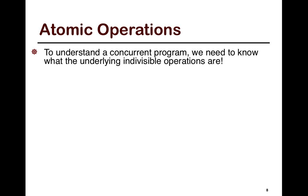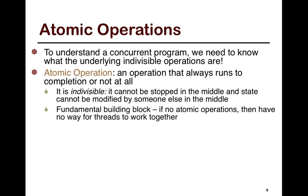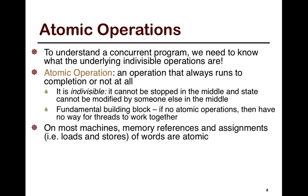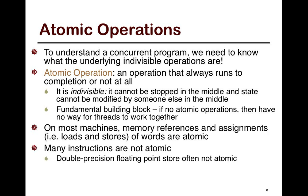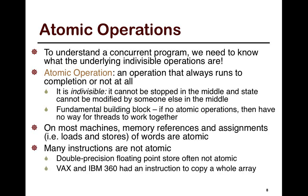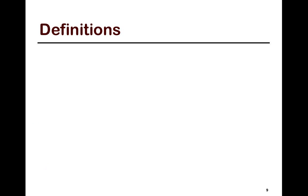To understand a concurrent program or try to reason about it, you need to fundamentally understand what atomic or indivisible operations are — that is, the sequence of operations in your program that have certain properties that make it easy to reason about.